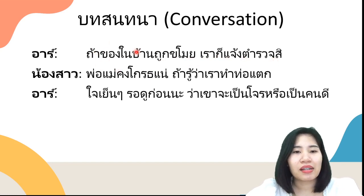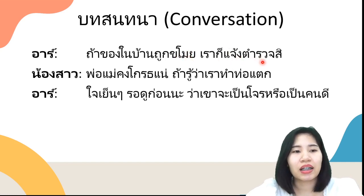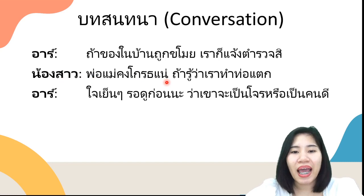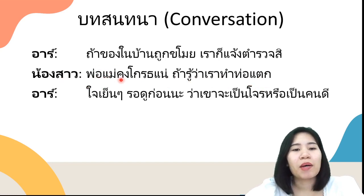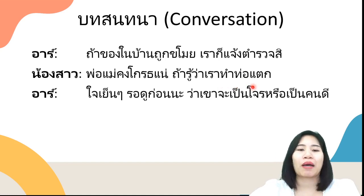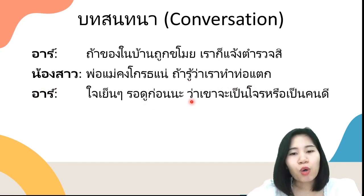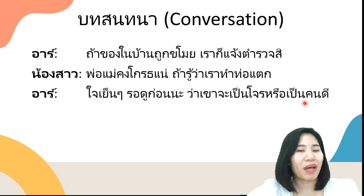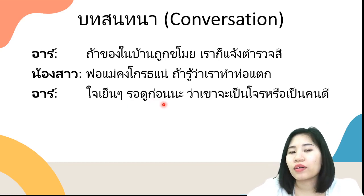อาบอกว่า: ถ้าของในบ้านถูกขโมย เราก็แจ้งตำรวจสิ — if things in the house were stolen, we will report to the police. น้องสาวบอกว่า: พ่อแม่คงโกรธแน่ ถ้ารู้ว่าเราทำท่อน้ำแตก — parents might be angry for sure if they knew we broke the pipe. อาบอกว่า: ใจเย็นๆนะ รอดูก่อน ว่าเขาจะเป็นโจรหรือเป็นคนดี — calm down, wait and see if he will be a thief or a good man.